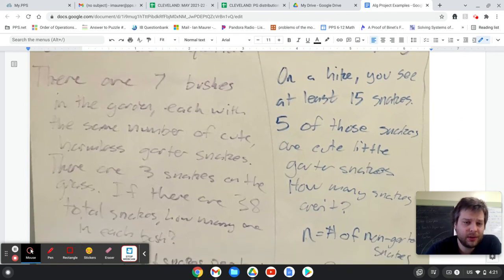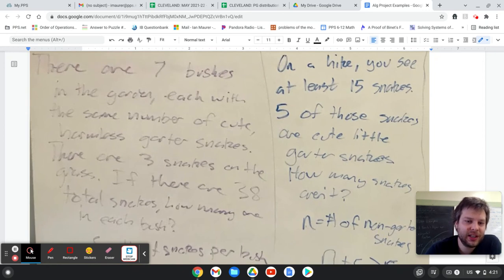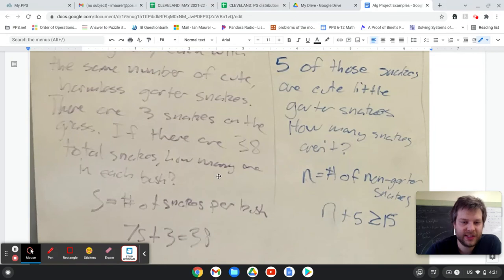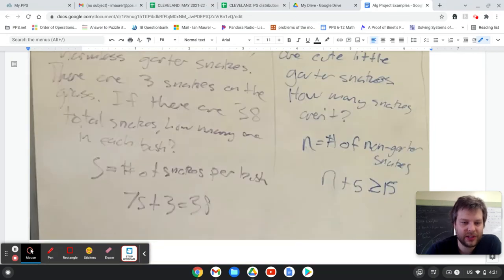So the one variable equation - I wrote that there's seven bushes in the garden and they have cute little harmless garter snakes in them, and there are three snakes on the grass, 38 total snakes. And so you could write 7s plus 3 equals 38 to solve for the number of snakes per bush.